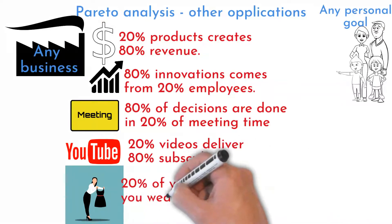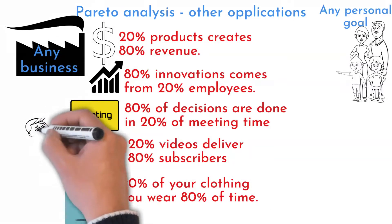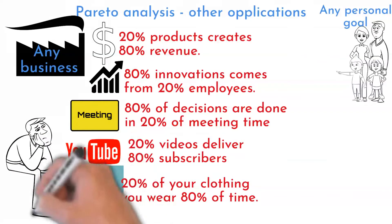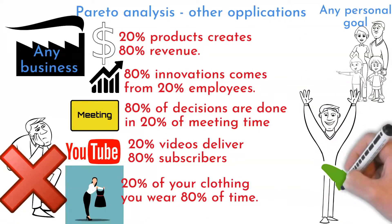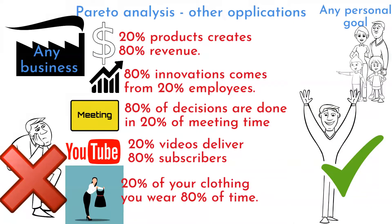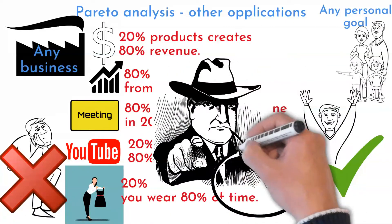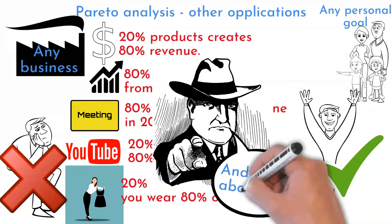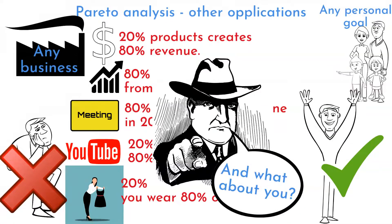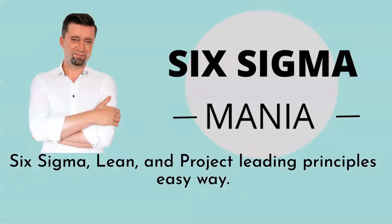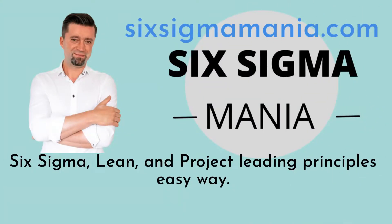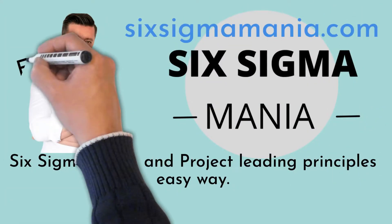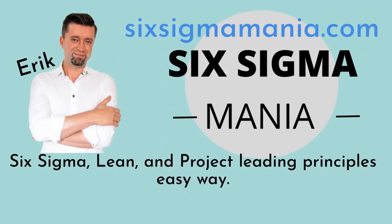20% of your clothing you wear 80% of the time. So reduce stress, improve work-life balance, and reach your goals more easily. Let me know how the Pareto rule has saved your time and money and improved your life. Take a look under the video where you will find a link to my blog — you can download a Pareto Excel template for free. Use it and share it.